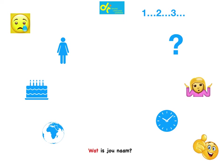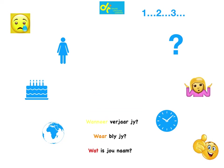First we have: 'Wat is jou naam?' — Wat means 'what' in English, and it's very easy to remember. The next one: 'Waar bly jy?' — Waar means 'where.' Then 'Wanneer verjaar jy?' — Wanneer means 'when.' And 'Wie hou van lees?' — Wie means 'who.'